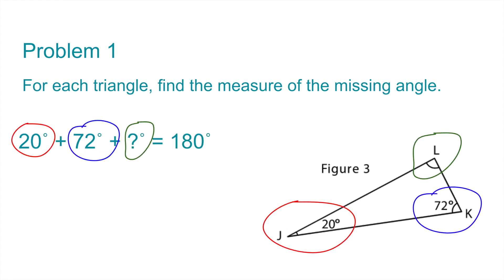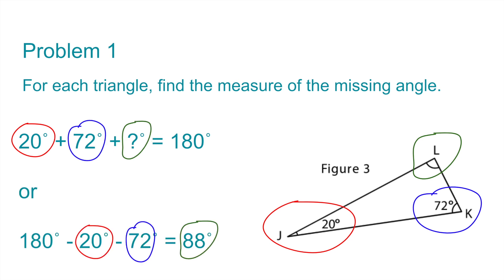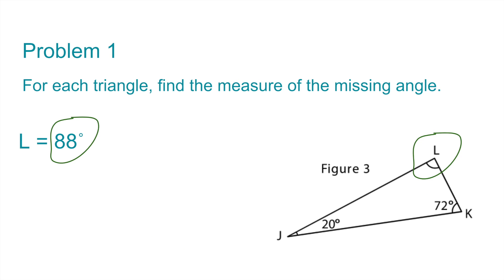The missing angle for figure 3 is angle L. Angle J is 20 degrees, angle K is 72 degrees, so 20 plus 72 plus the unknown value for L would equal 180 degrees. 180 minus 20 minus 72 is 88. So, the measure for angle L is 88 degrees.